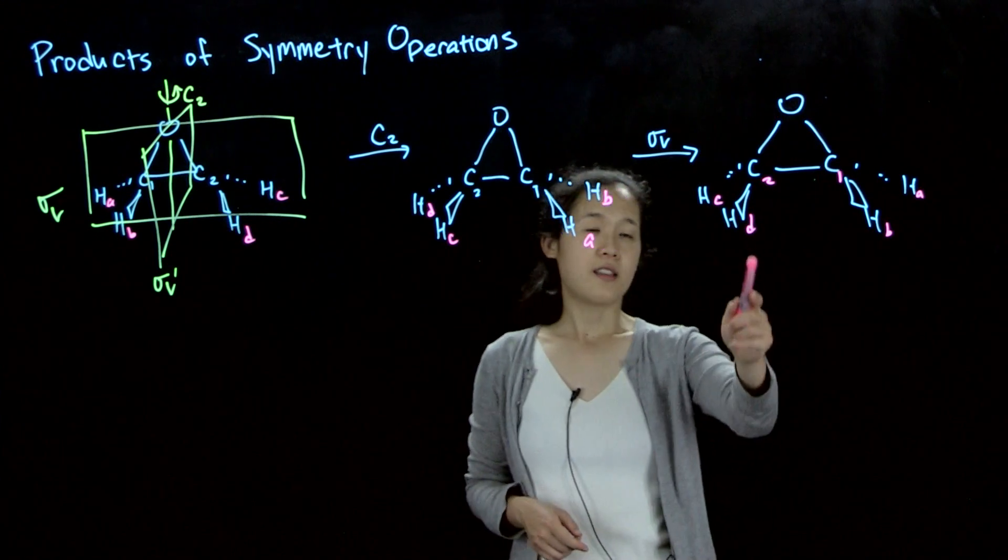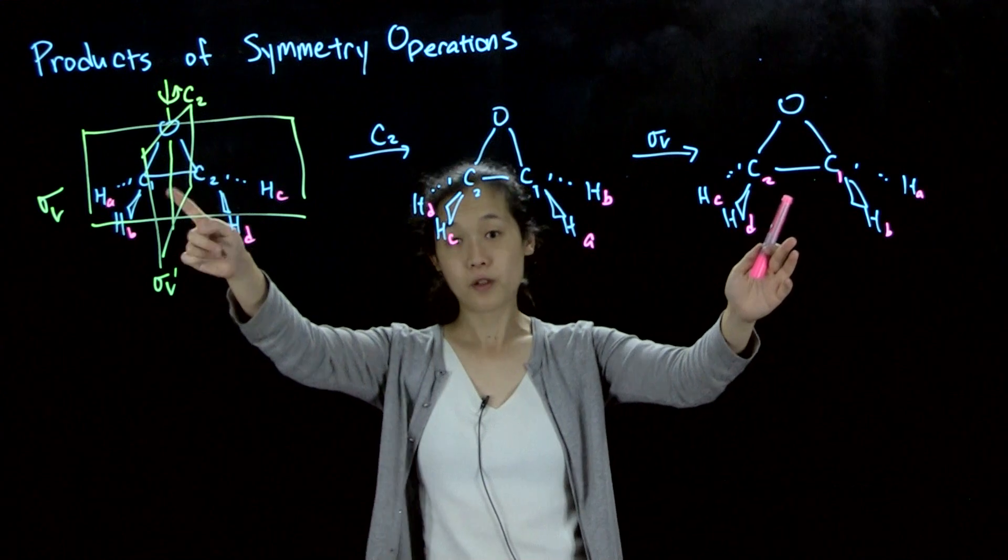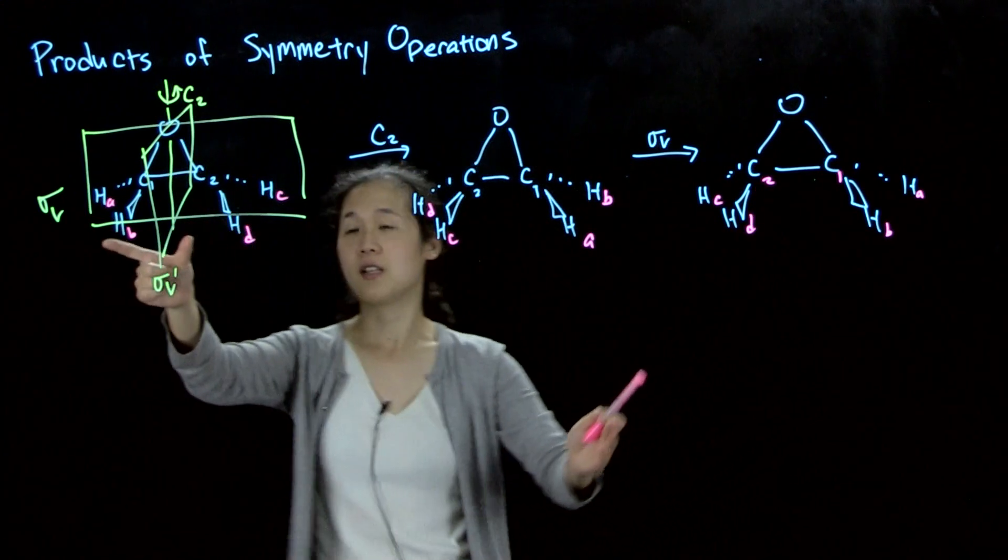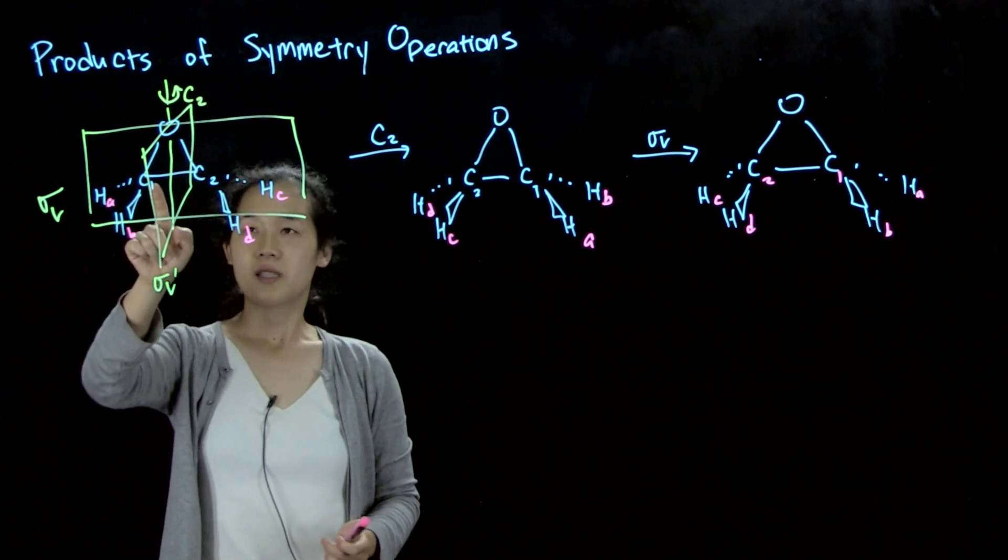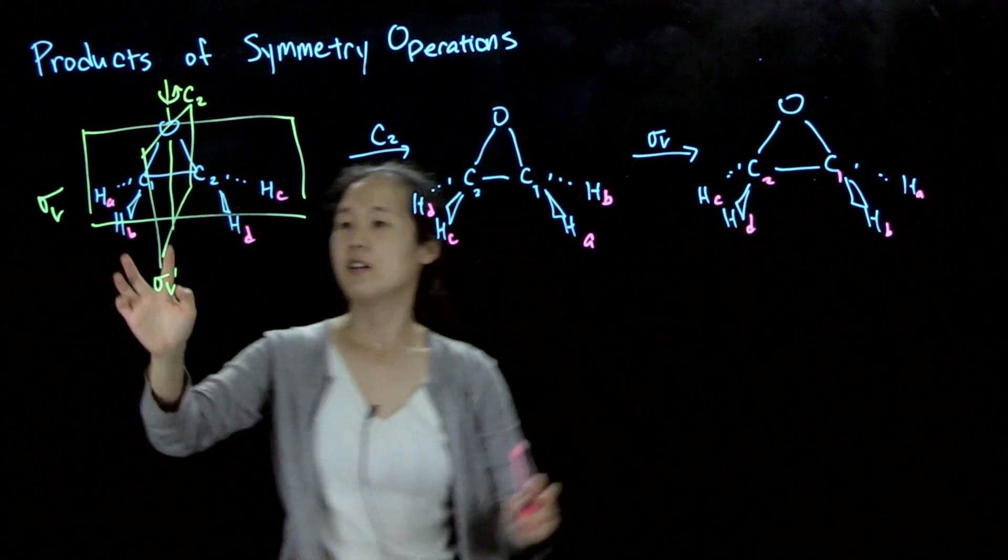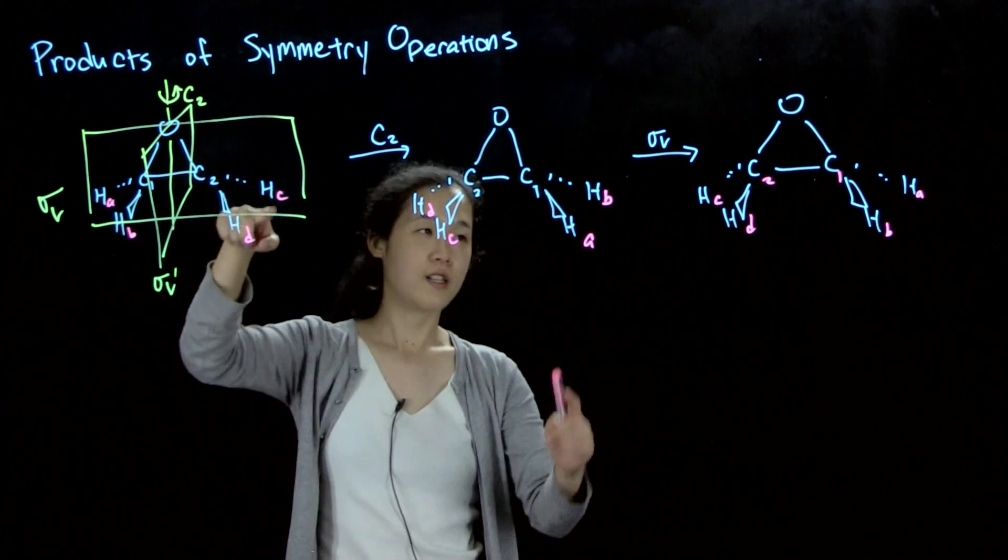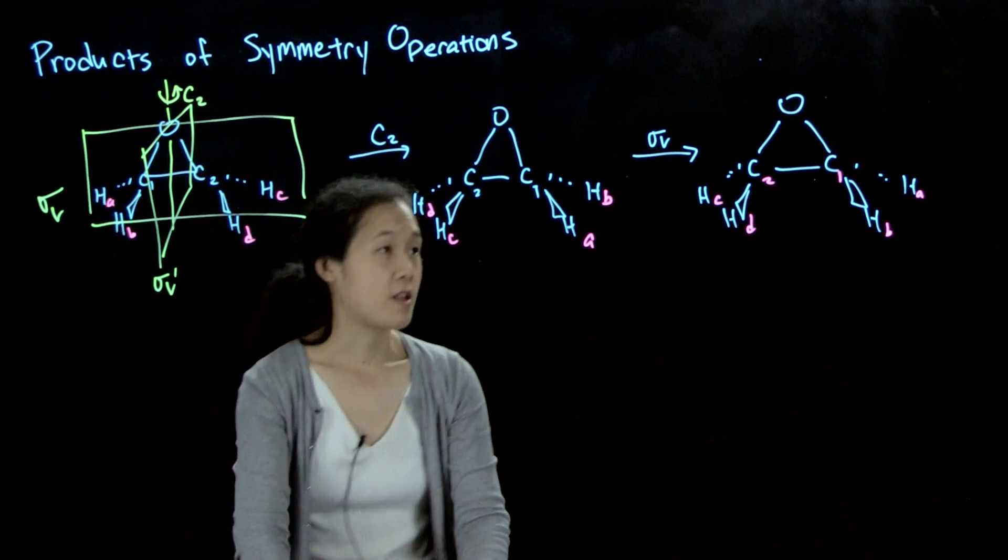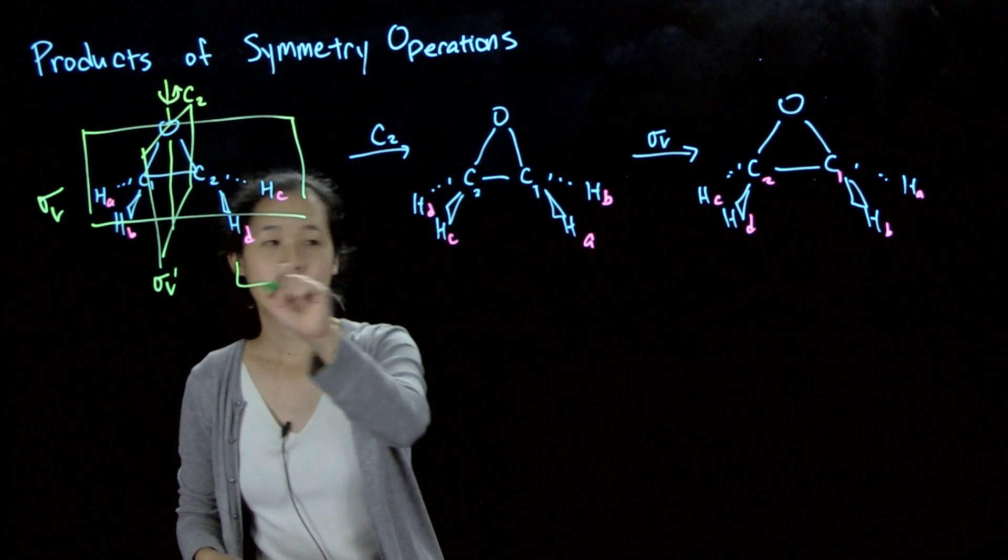So what you can see here is this final orientation is still a symmetry operation from the original orientation, but it's a different symmetry operation from starting from here compared to over here. If we can look at which one it is, we can see C1 and C2 have to be different, but C and D are still both in this kind of back and front orientation, A and B. So what this actually is, going directly from the starting orientation to this final orientation, we've done a sigma v prime.